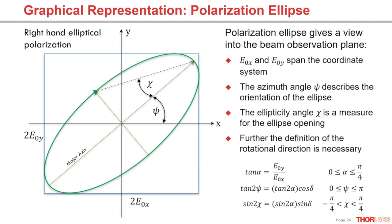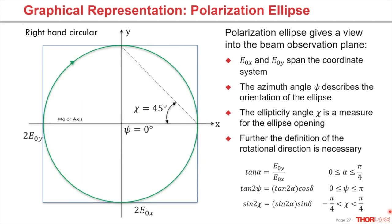The next example shows one of the polarization states where the ellipse degenerates to a circle. In that borderline case, the field components have the same magnitude but they are shifted by 90 degrees in phase. A circular polarization is given when the orientation angle is zero — meaning the ellipse is aligned with the X, Y coordinate system. Further, the ellipticity is at its maximum, resulting in a chi angle of 45 degrees. Here we are having a right-hand circular polarization.